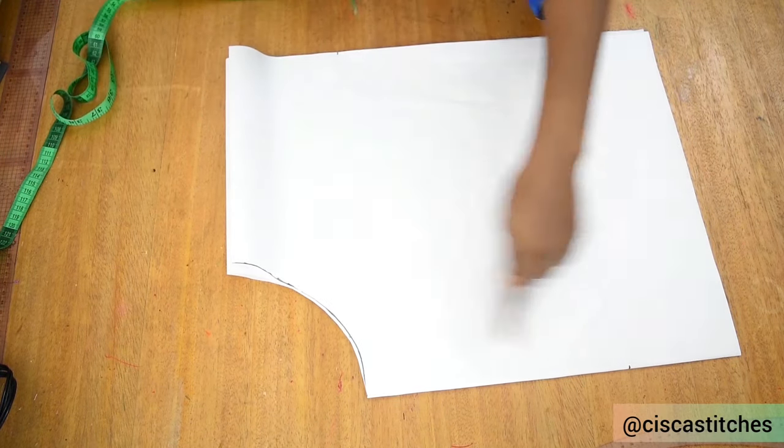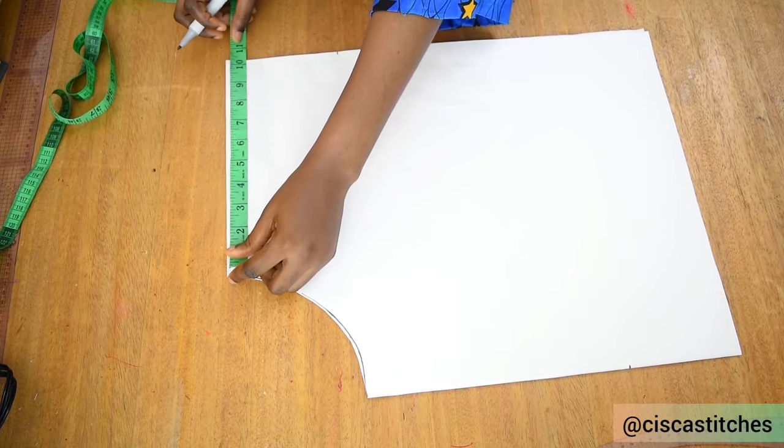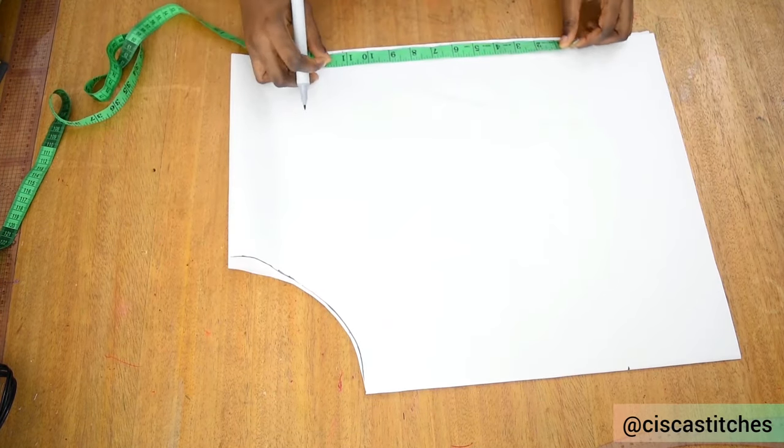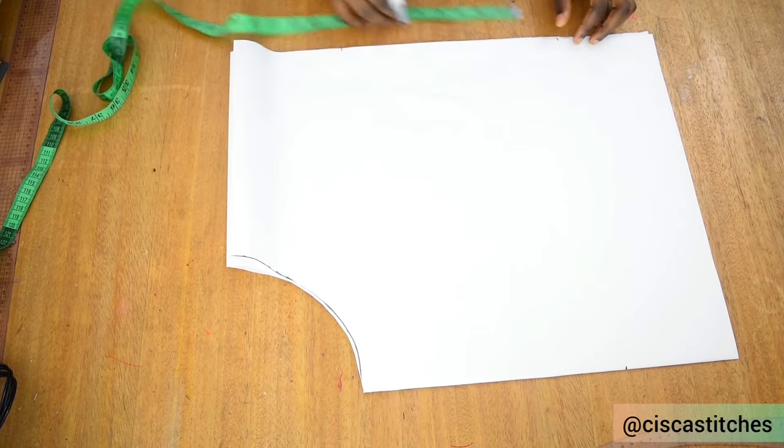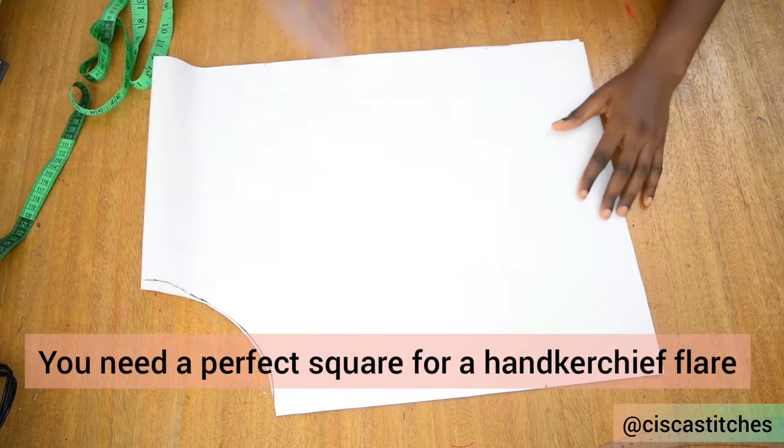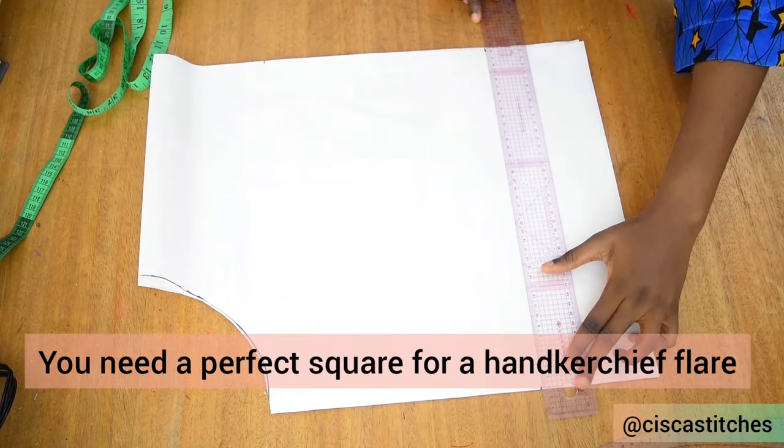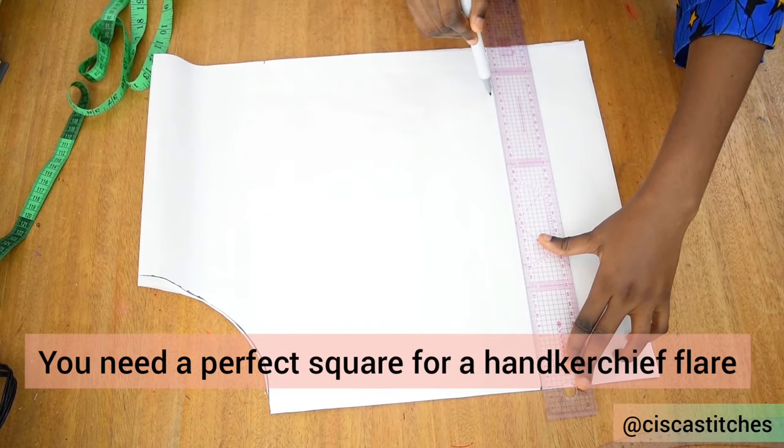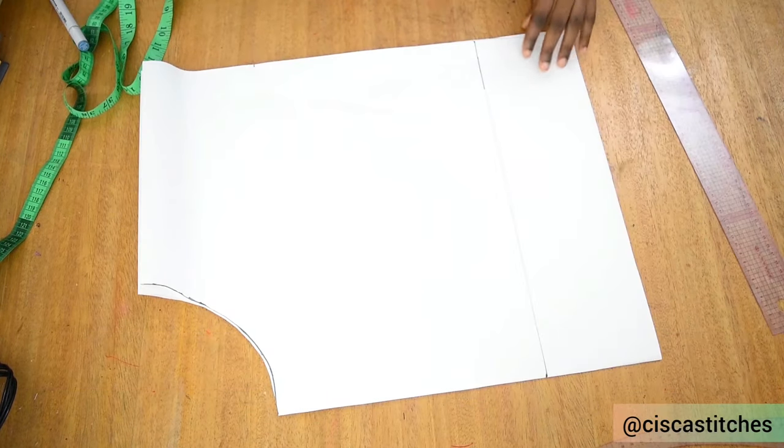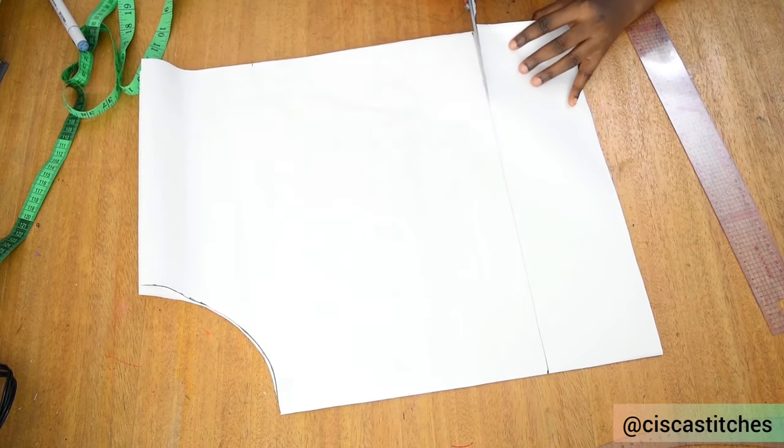I'll mark this 10.25 inches in addition to that, so I'll come right here and mark 10.25 inches like so. Can you see what I'm doing? Then I join the points with a straight line like this, and then I'm going to cut this part out.